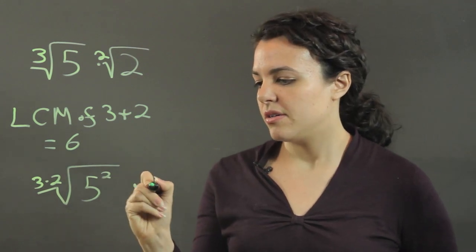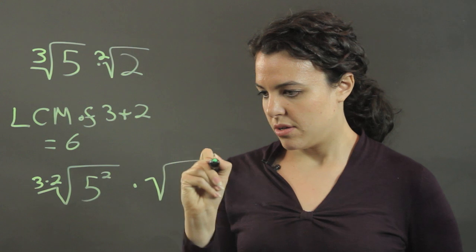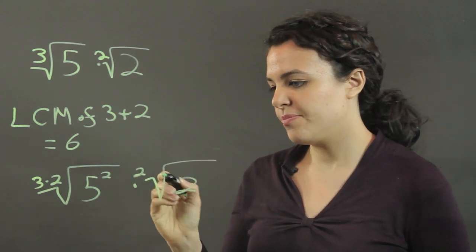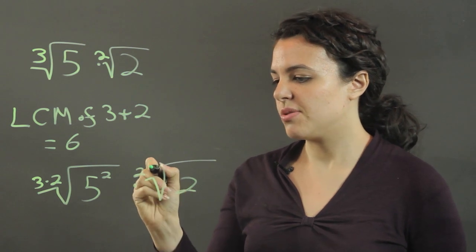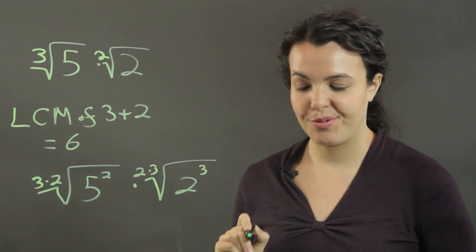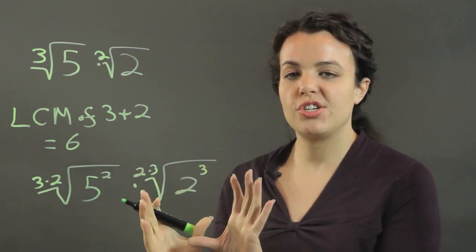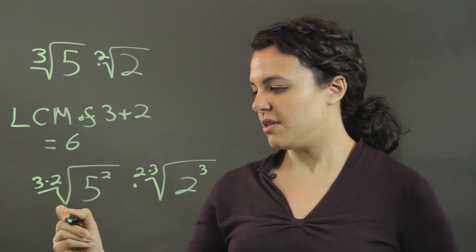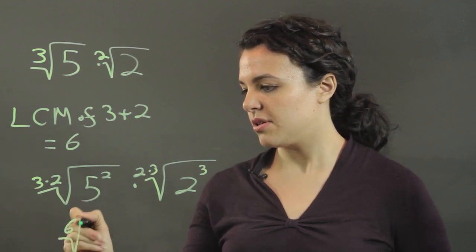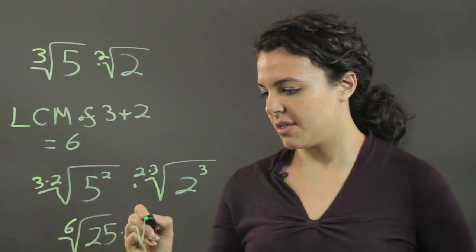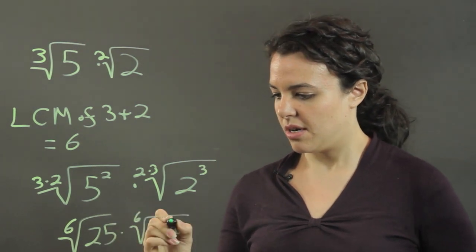And then our square root of 2, to make this 2 a 6, we have to multiply by 3. And then we raise this to the power of 3 so that we're not changing the overall value. And then this simplifies to the 6th root of 25 times the 6th root of 8.